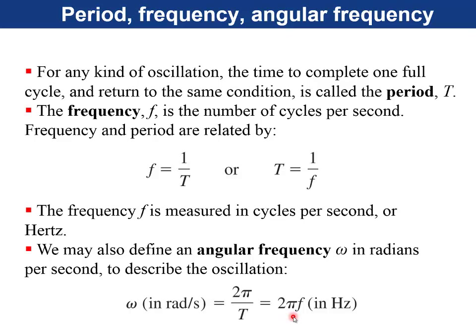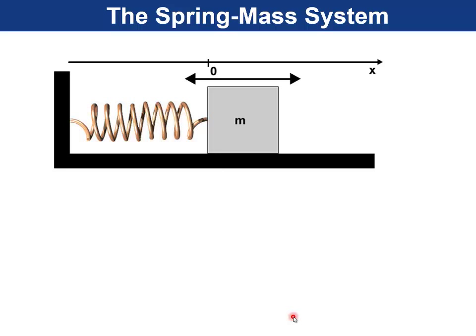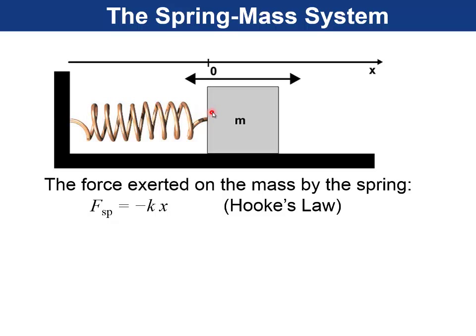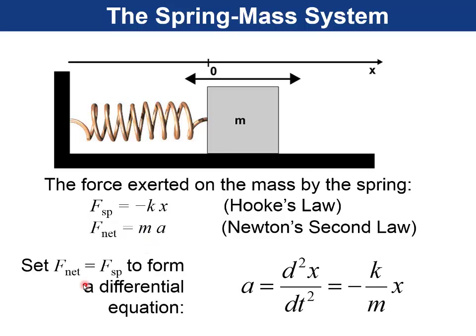Next is the spring mass system. This has sinusoidal oscillations. You have a mass on a frictionless surface, attached to a spring, and the other end of the spring is attached to a fixed wall. The equilibrium position of the mass is when x equals 0. If you move the mass to the right, a distance x, then the spring exerts a horizontal force on the mass equal to negative k times x, where k is the spring constant of the spring. So if that's the only horizontal force, then by Newton's second law, the x component of the force is the mass times the x component of the acceleration.